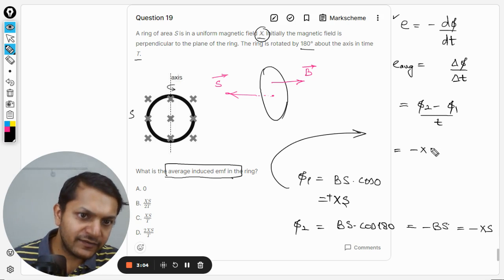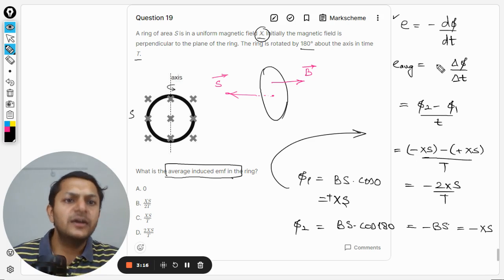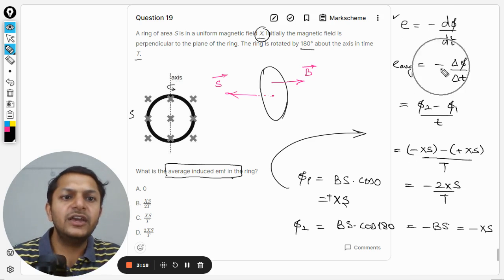Now we are going to substitute these values here. φ₂, so φ₂ is already negative minus φ₁. φ₁ is positive.